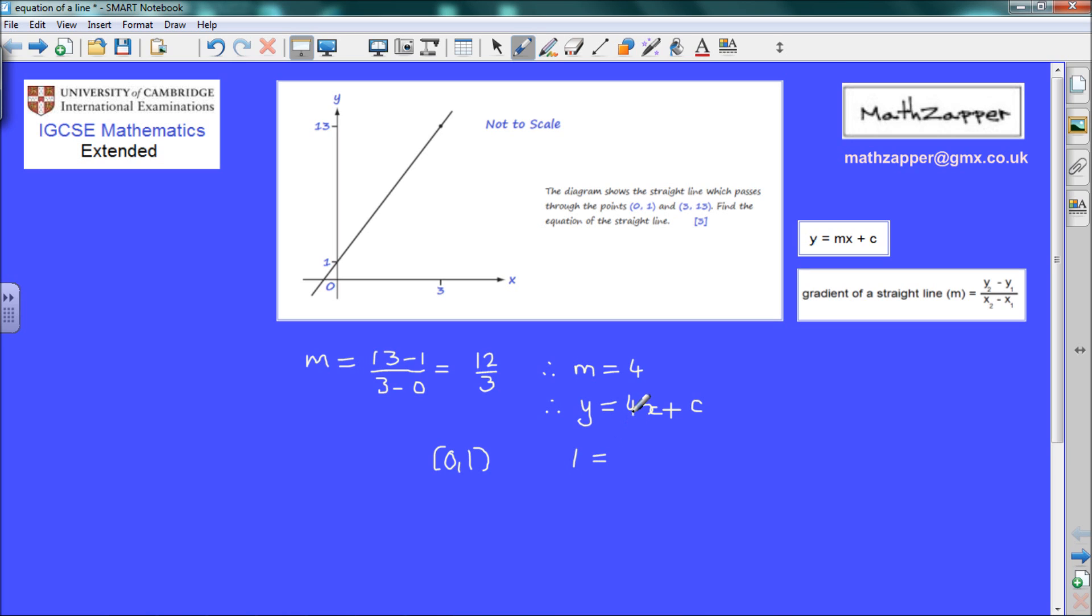So y equals 1, and that is equal to 4 lots of x, so 4 multiplied by x which is 0, plus c. Well, 4 times 0 is 0, so therefore 1 is equal to c.